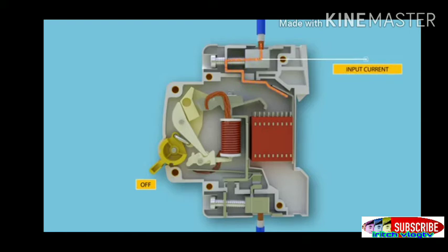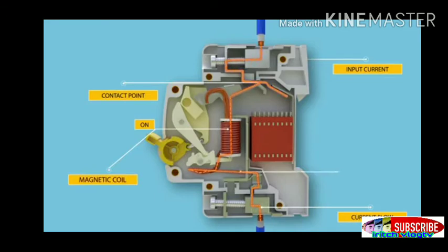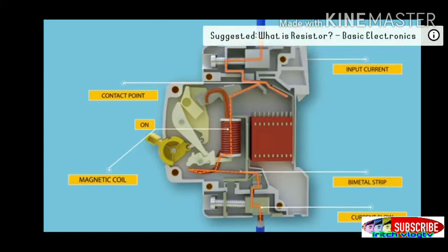Under normal working conditions, the circuit breaker works when we switch the operator manually from position off to position on. The electric current carrying path shown in animation: first incoming terminal, then contact point of moving and fixed contacts, then magnetic coil, then biometallic strip, then outgoing terminal. All are arranged in series.